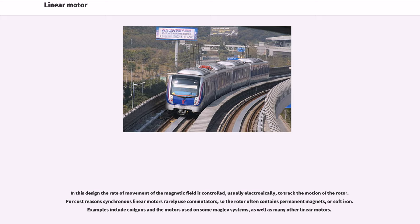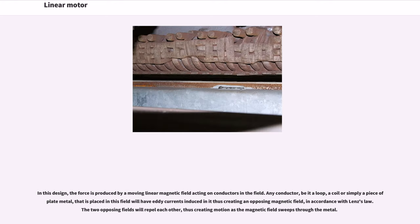In this design, the rate of movement of the magnetic field is controlled, usually electronically, to track the motion of the rotor. For cost reasons, synchronous linear motors rarely use commutators, so the rotor often contains permanent magnets or soft iron. Examples include coil guns and the motors used on some maglev systems, as well as many other linear motors.